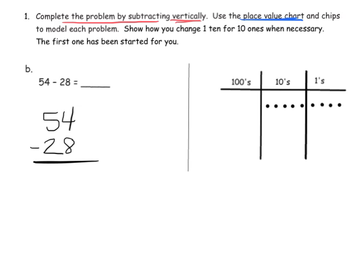Now, before we subtract, we should see that we're going to need to do some unbundling, because we're supposed to take away eight 1s but we only have four 1s. So let's go over to our chart and take this one dot — that's actually a 10, because it's in the 10s column, this dot represents 10. So I'm going to take that 10 and unbundle it into 10 1s in the 1s column.